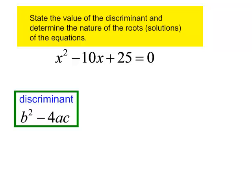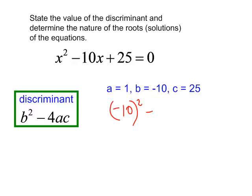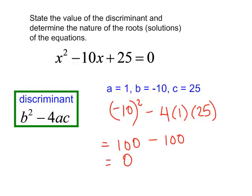Everything is on one side. My a is equal to 1, b is negative 10, and c is 25. The discriminant will be b squared minus 4 times a times c. That will be 100 minus 100, which will equal zero. The value of my discriminant is zero. That means I will have one real root.